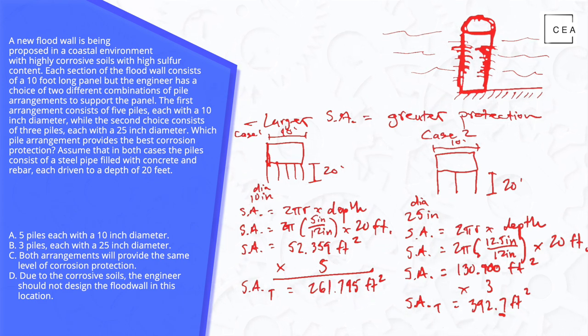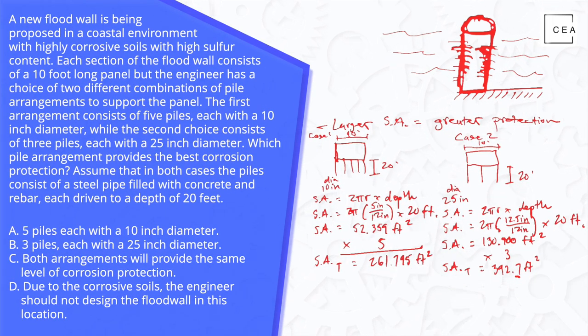So we said earlier that the larger surface area provides greater protection. The question statement asks for which arrangement provides the best corrosion protection. So case two provides the best corrosion protection because it has a larger surface area, 392.7 feet squared.